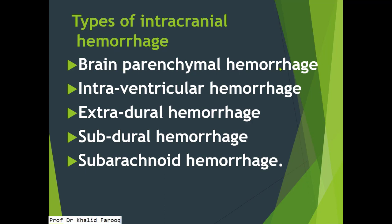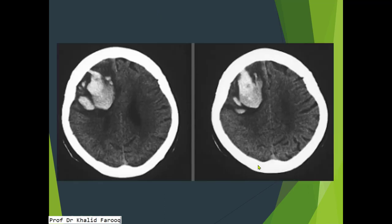There are types of intracranial hemorrhage: number one, brain parenchymal hemorrhage; number two, intraventricular hemorrhage; number three, extradural hemorrhage; number four, subdural hemorrhage; and number five, subarachnoid hemorrhage. This is an example of brain parenchymal hemorrhage — we see a high density area noted in the right frontal lobe.